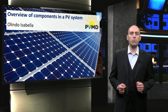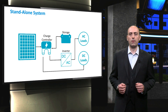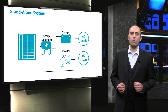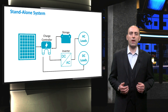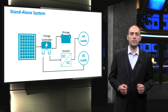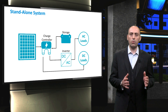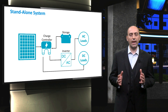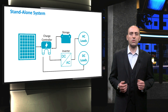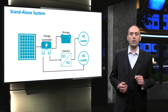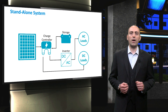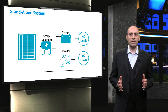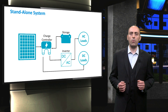In this video, we will look more closely at each component of the system. Here we report the topology of a generic standalone system with storage for powering both AC and DC loads. Although the solar panels are the heart of a PV system, many components are required for a working system. Let's divide these components into three main groups.